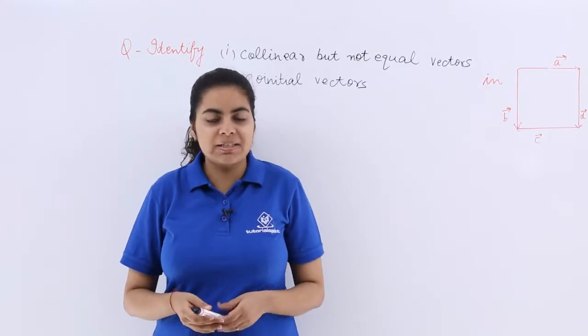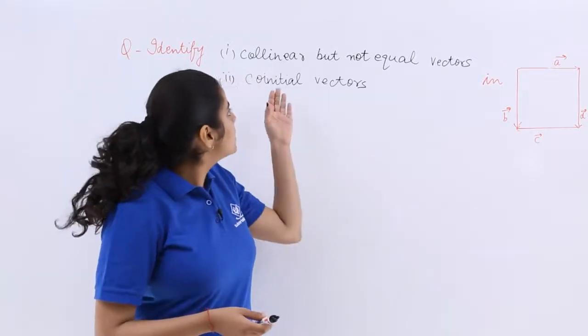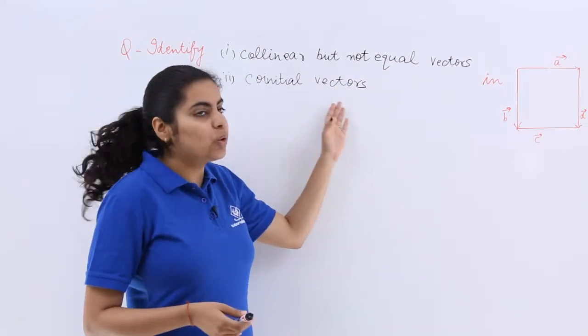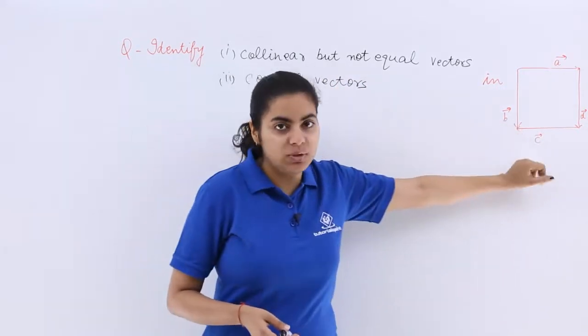We have studied about the type of vector. Let's see this question. It says identify first part: collinear but not equal vectors, second part: co-initial vectors in this particular square.